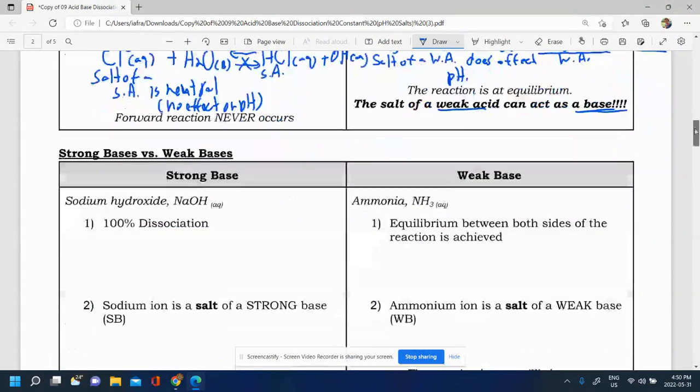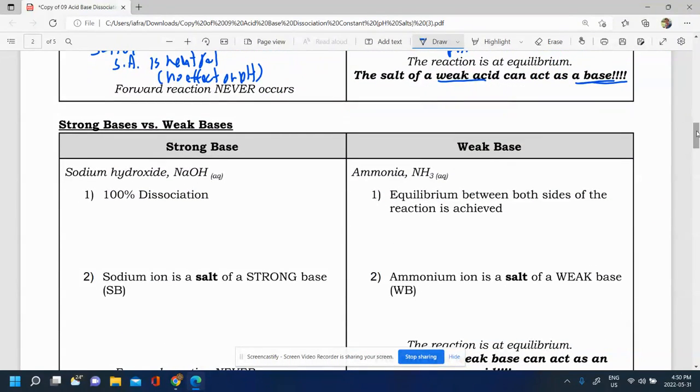Now let's take a look at the same scenario for strong bases and weak bases. We'll look at sodium hydroxide. Sodium hydroxide, it wants to dissociate 100%. So if you had sodium hydroxide and you put it with some water, you would get some Na plus, and then some OH minus.